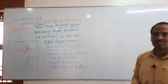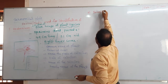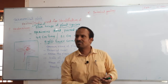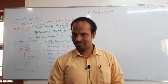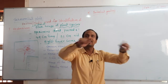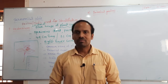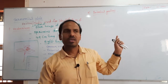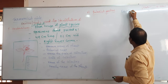After herbarium, the next taxonomical aid is Botanical Gardens. Botanical gardens come under ex-situ conservation - not in-situ conservation. Ex-situ means off-site conservation, where plants are protected outside their original habitat under human care.